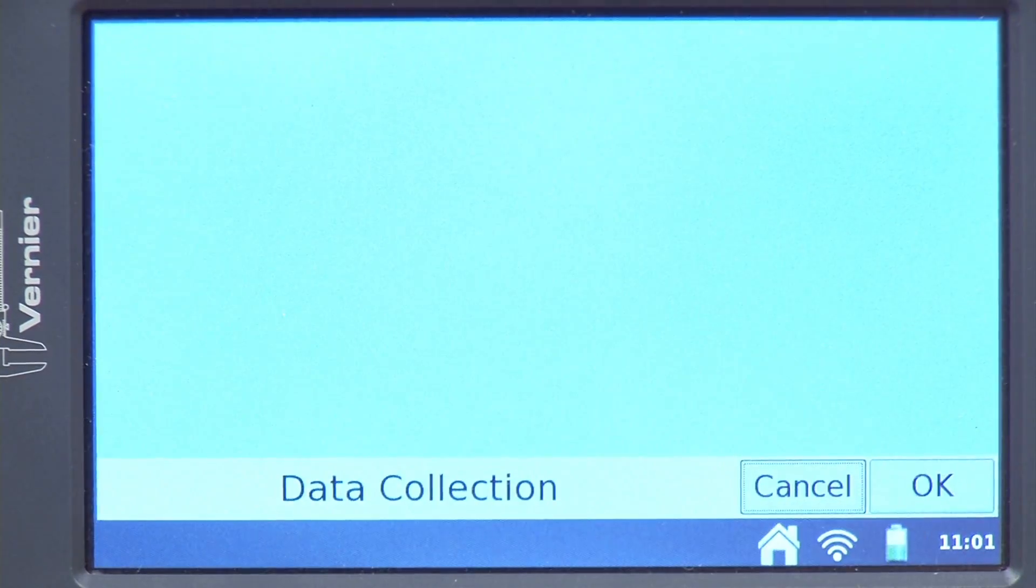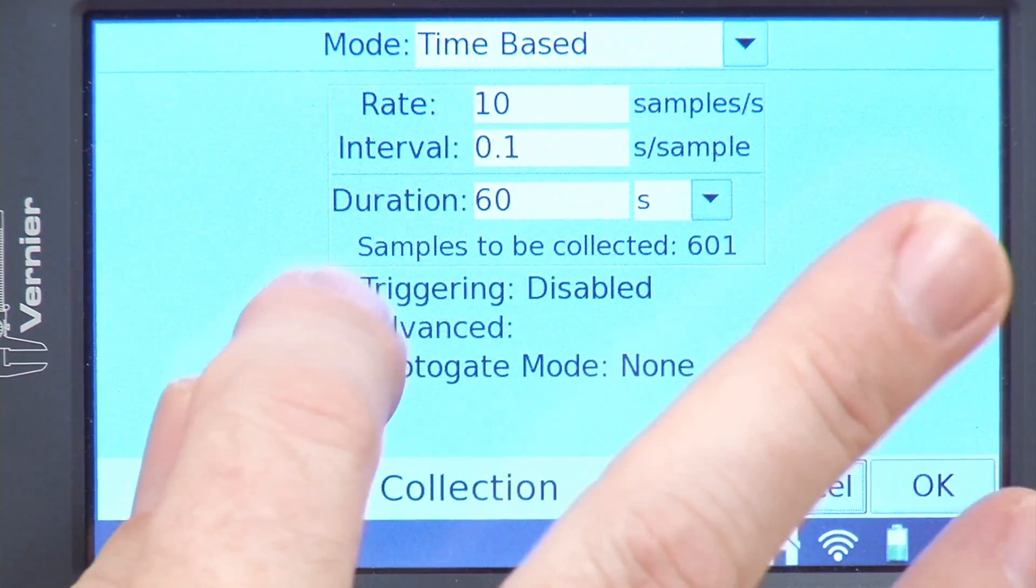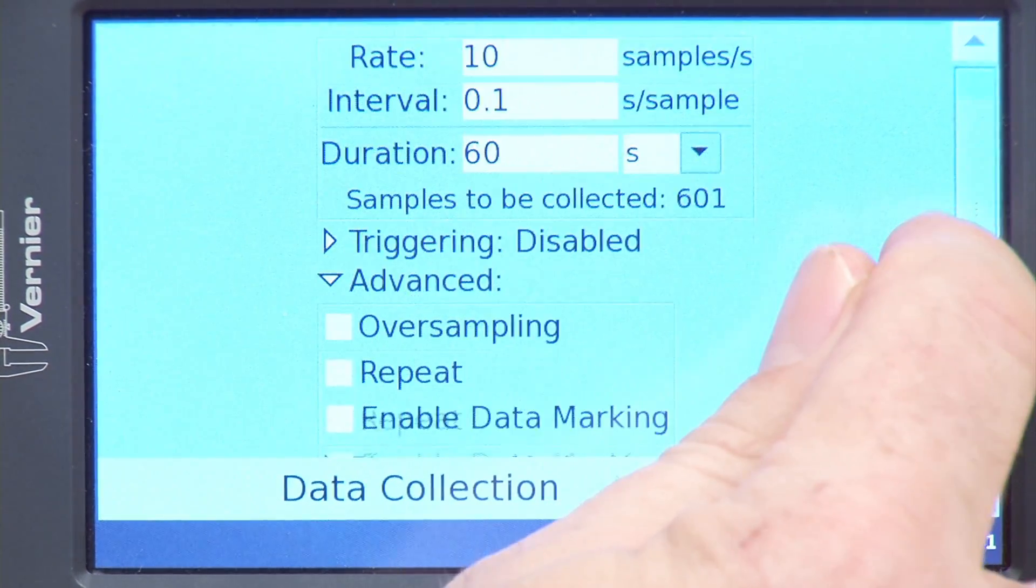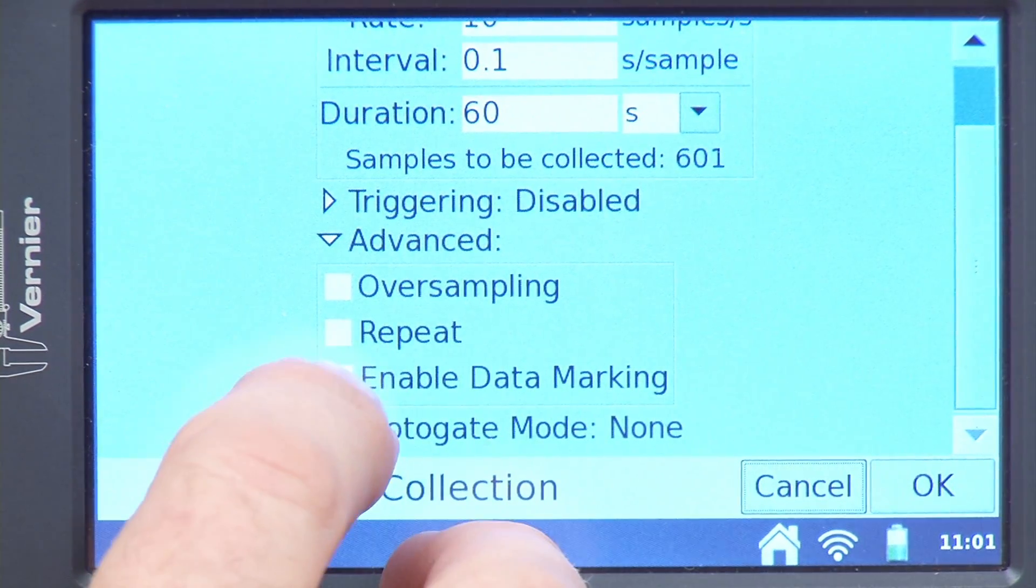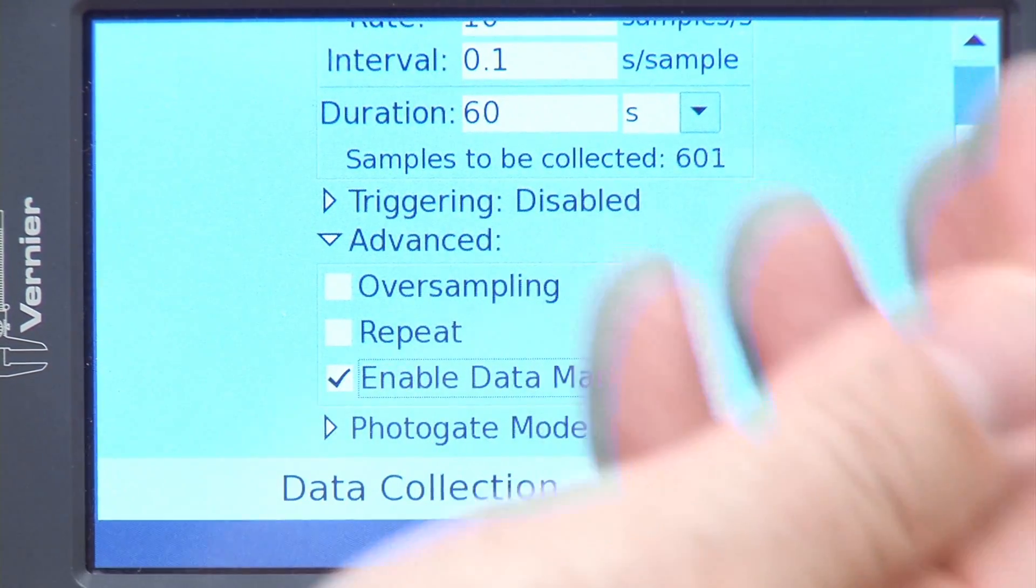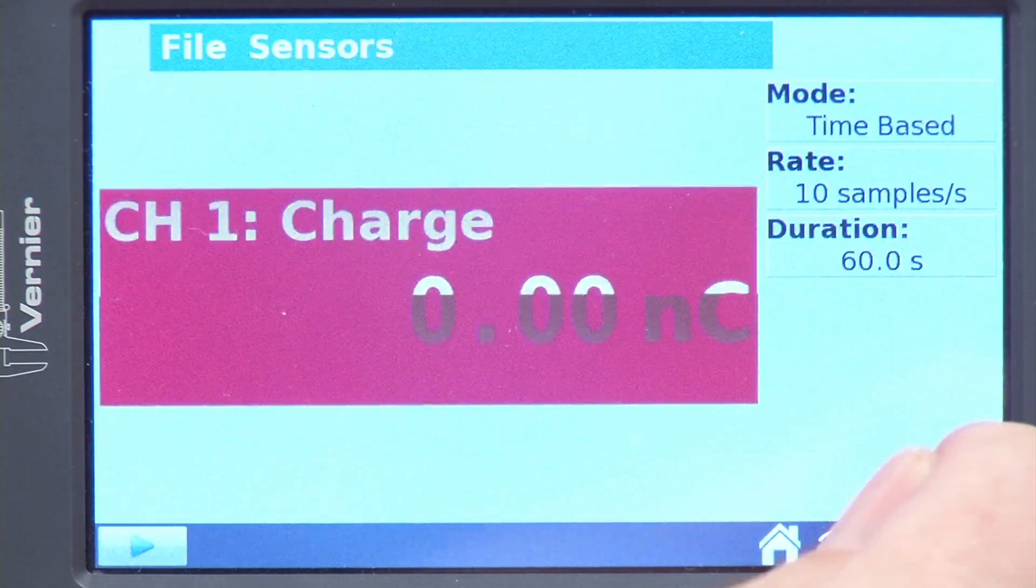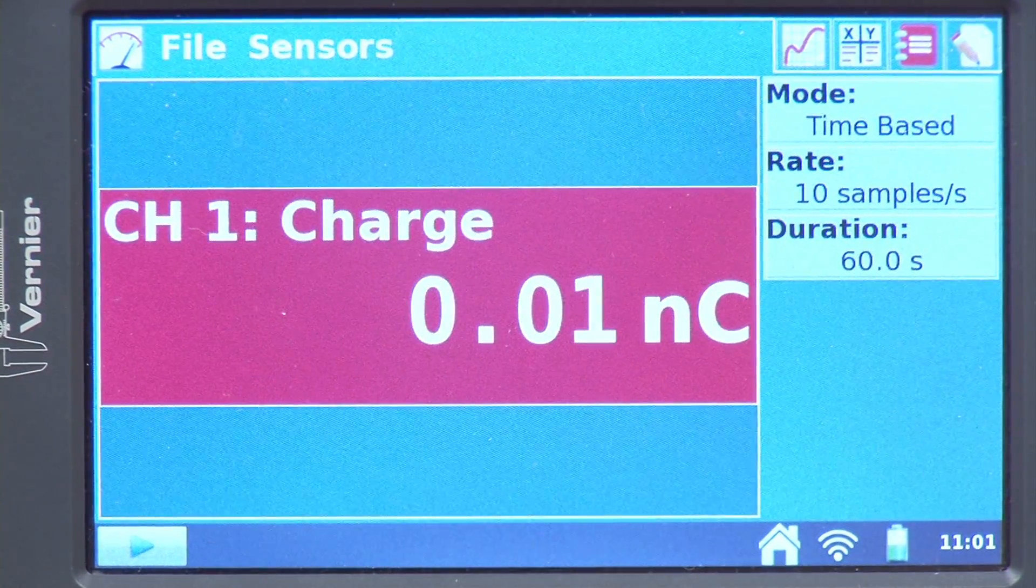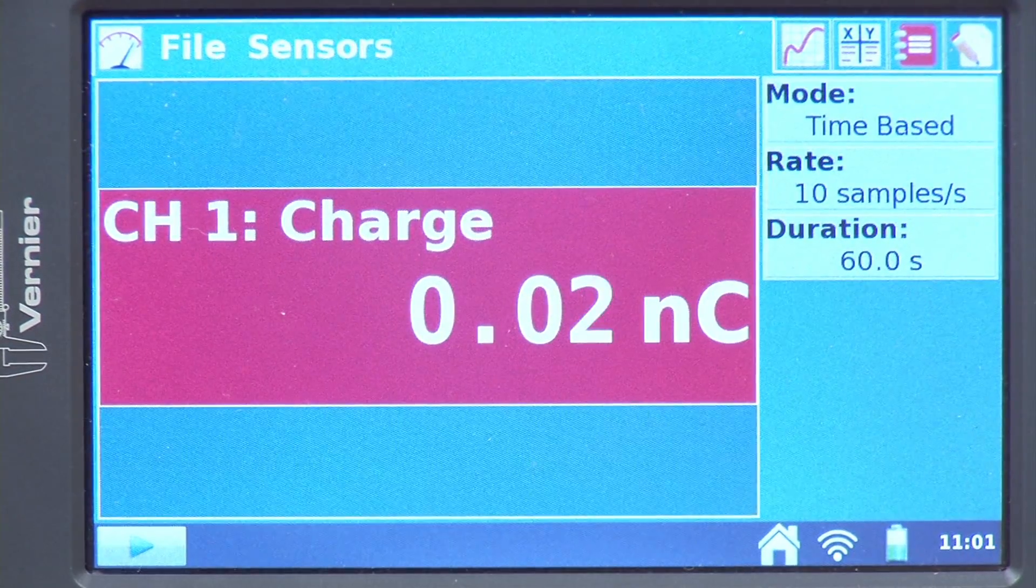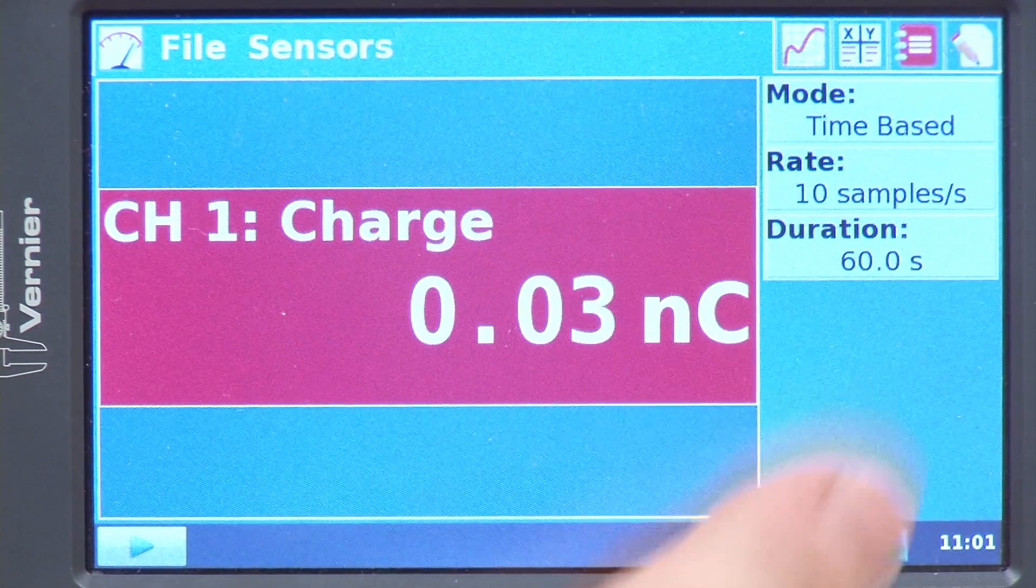But I do need to make one change. I would like to do what's called a data mark, and enable that. And what a data mark allows me to do is actually mark points on a graph, and be able to describe what it is that I'm seeing on that part of the graph. So all I did was enable that, and now we're ready to go.